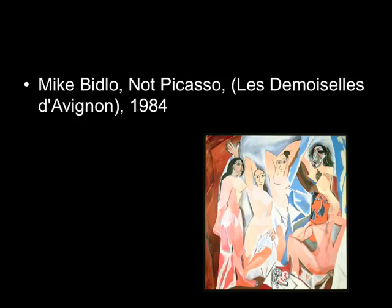Another artist who emerges in the eighties and nineties as an appropriationist is Mike Bidlo, who is also taking on twentieth-century masters and recreating them, calling into question the whole notion of originality. What Bidlo does is make such good copies of these masterpiece paintings — so spot-on — that you start to wonder what was so creative or original about the original work.